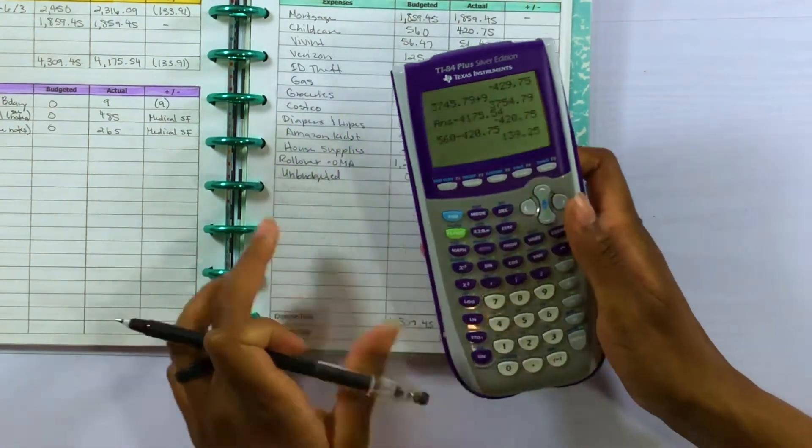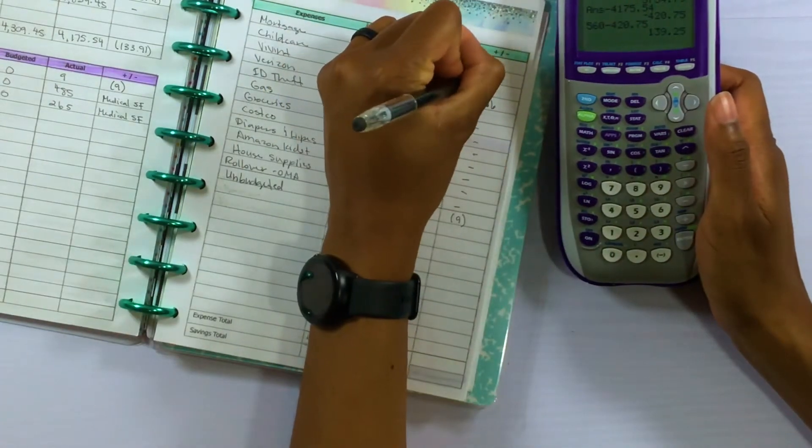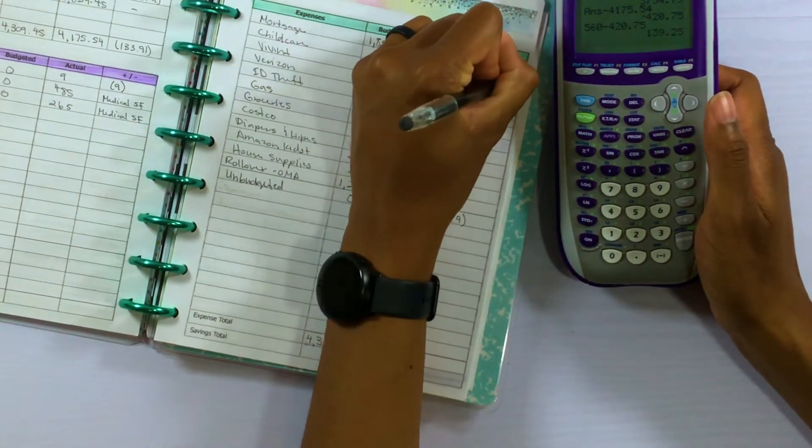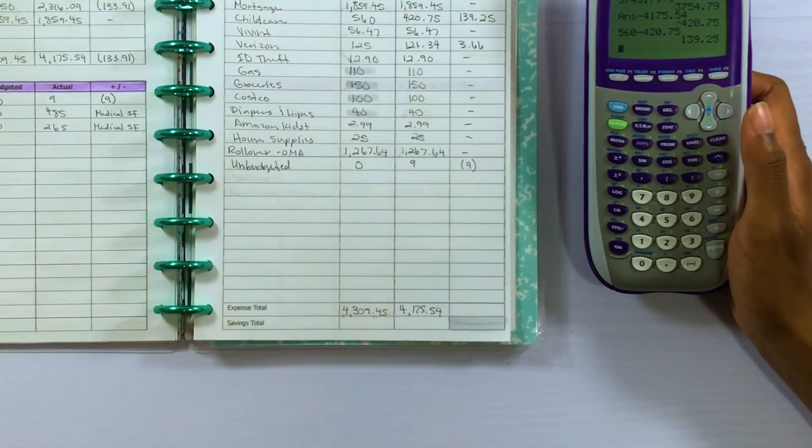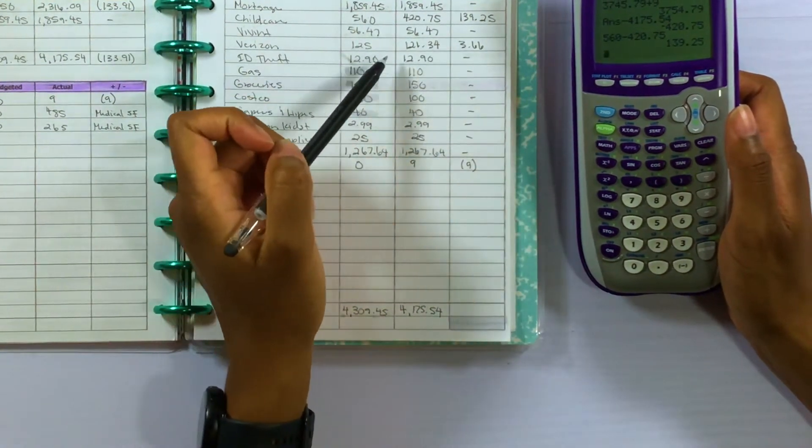So $139.25 is what we were short in putting into our child care sinking fund.